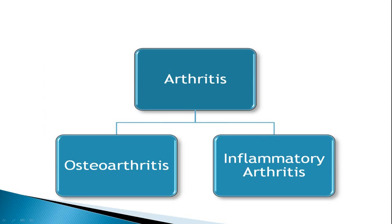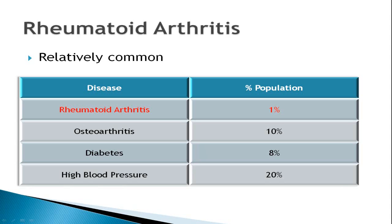Broadly speaking, there are two types of arthritis. There's osteoarthritis, which is a wear-and-tear arthritis that we all get to some degree as we get older, whether symptomatic or not. Then there's inflammatory arthritis, which is very different. Rheumatoid arthritis is the most common type of inflammatory arthritis. While it is relatively common, it isn't as prevalent as other diseases — occurring in approximately 1% of the population, compared to osteoarthritis at about 10%, diabetes at around the same, and hypertension affecting 1 in 5 people.